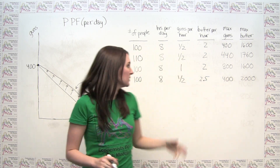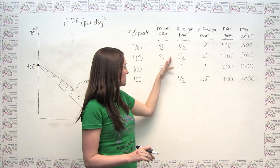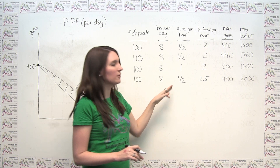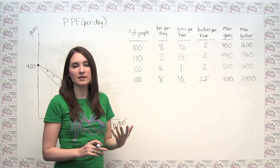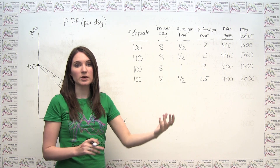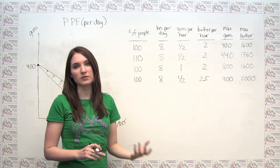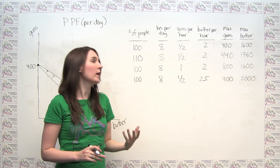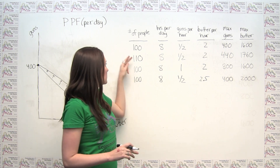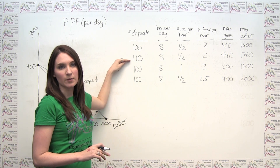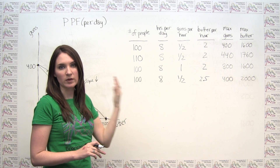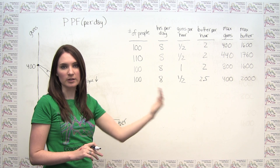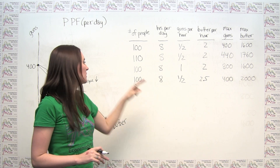So we can think about how each of the different changes affects the production possibilities frontier in a different way. We saw that if we're simply changing the number of resources available, we get a parallel shift.